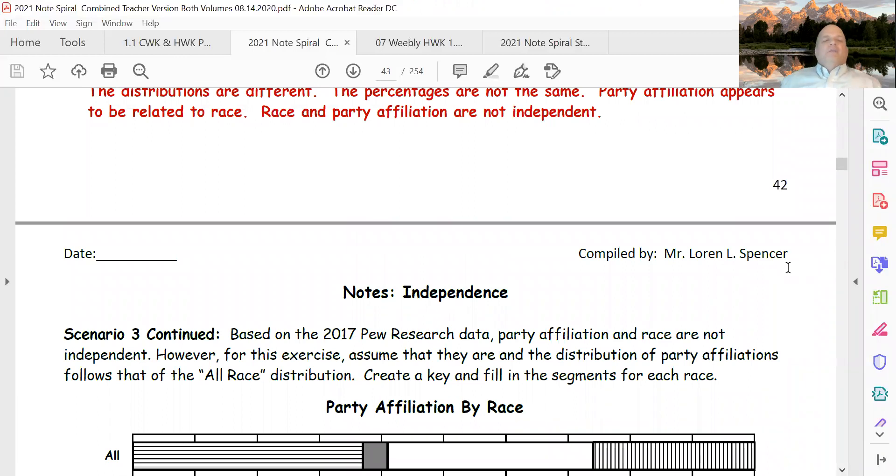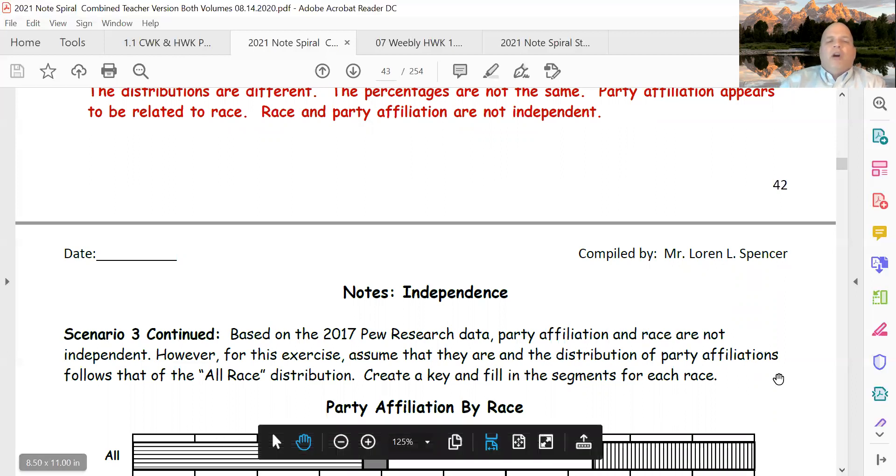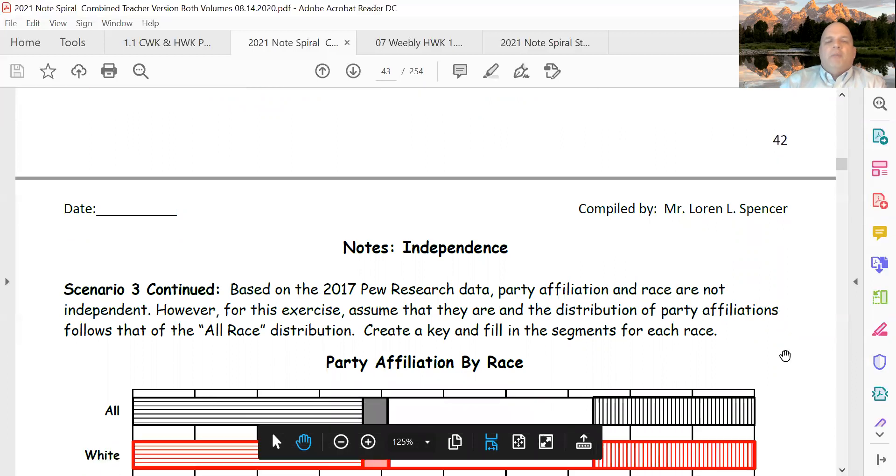Moving to page 43, we said alright, based on the 2017 Pew Research poll—and we did this all in video 17—party affiliation and race are not independent. However, for this next exercise, for scenario three, assume that they are, assume that they are independent and the distribution of party follows the all race distribution.